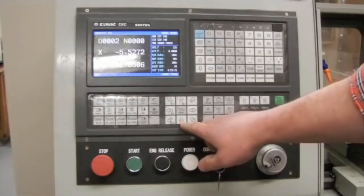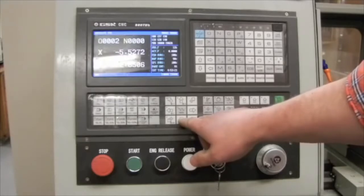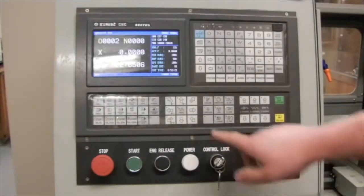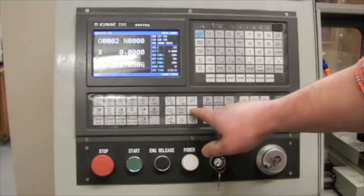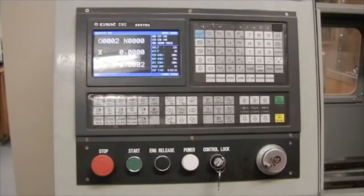I'm going to do the X axis first, so I press the X arrow pointed downward, and once all movement ceases, I will press the Z right handed arrow and you can hear the machine moving in the background. The machine will then move to home position.